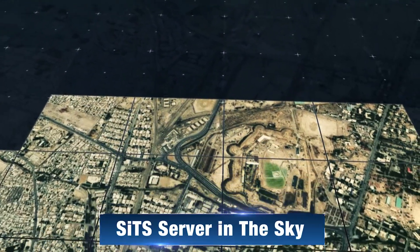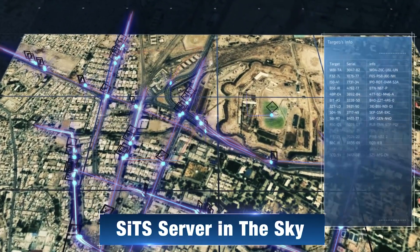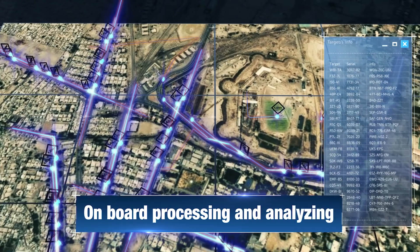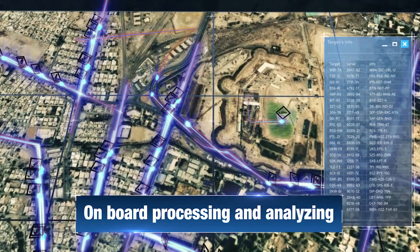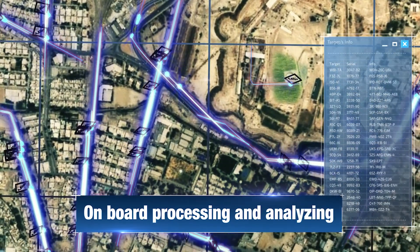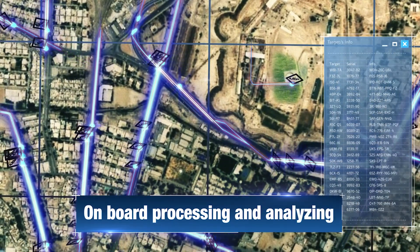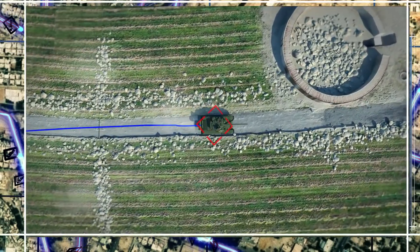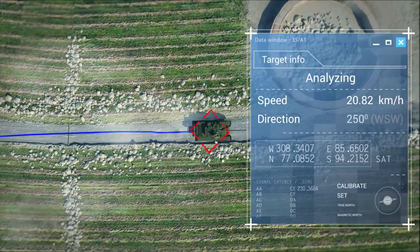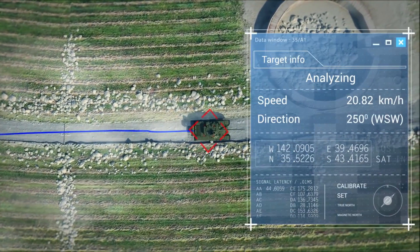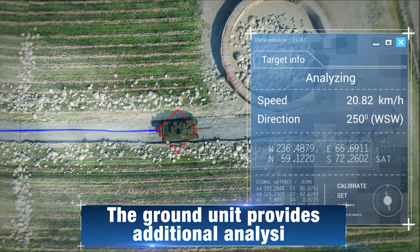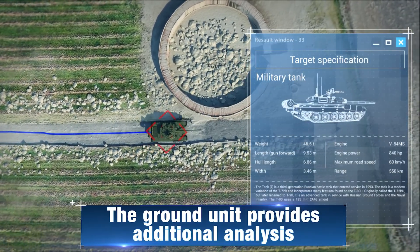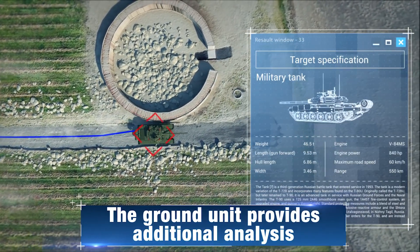The system uses SITS, Server in the Sky, combined with advanced smart algorithms which automatically map, track and analyze each movement in the coverage area. The information is then sent to the ground unit for further analysis and precise distribution.